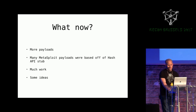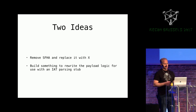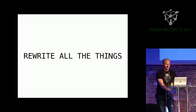We talked about it and said we want more payloads — we want to be able to basically reuse what Metasploit has. I said I'm going to do this, I got some ideas, and that brings us to the fun part. I had two ideas: first, remove the Stephen Fuhrer Hash API stub and replace it with something else; or I could build something that would rewrite all the payloads for me. Unfortunately — or fortunately — I decided to rewrite all the things with automation.